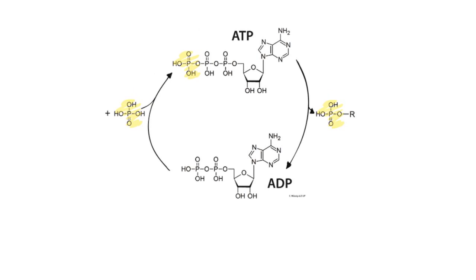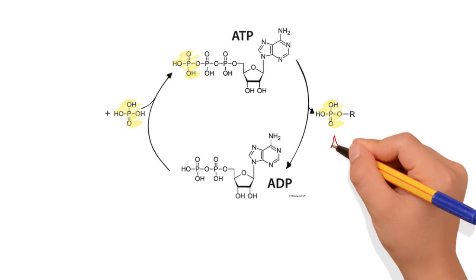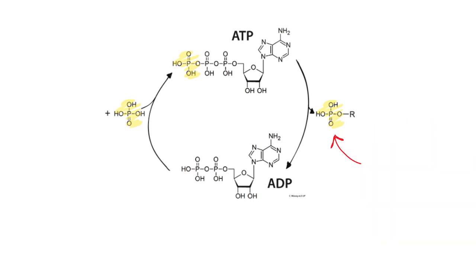ATP gives one of these phosphates and becomes ADP, adenosine diphosphate. This phosphate that it gives provides energy for a reaction. I'll make a separate video about how this happens and link it below. The phosphate is then reattached in a separate reaction.